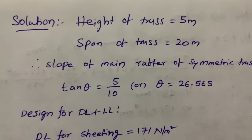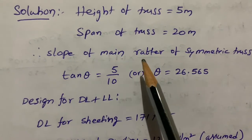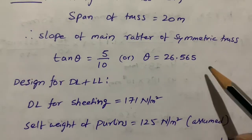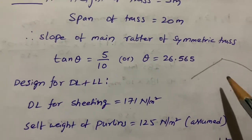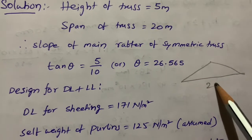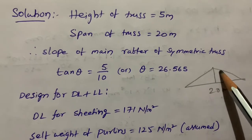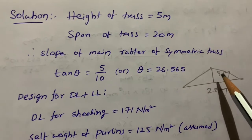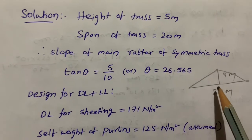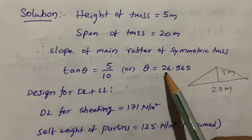The given data: height of the truss is 5 meters and span of truss is 20 meters. We need to find out the slope of the main rafter — the rafter is the sloped member. The span is 20 meters and height is 5 meters, so tan θ = opposite/adjacent = 5/10. Therefore θ = tan⁻¹(5/10), giving us the slope angle.